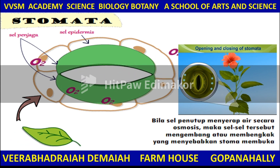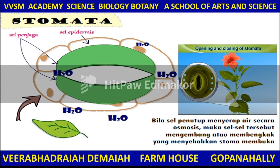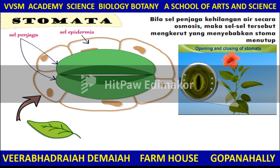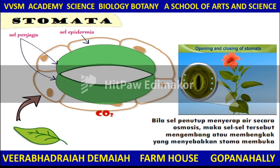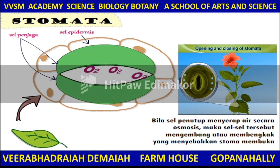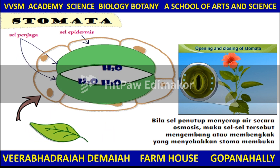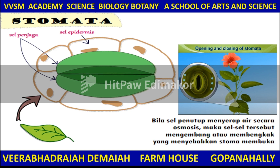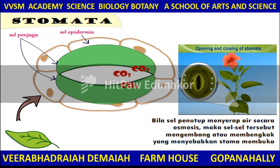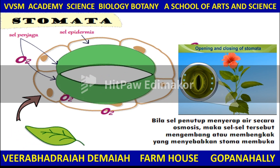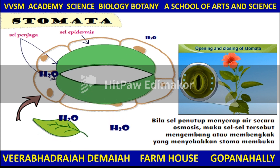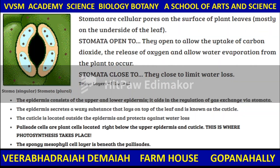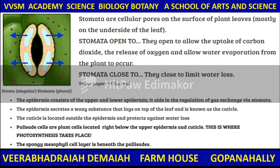Stomata is an important organ in the leaf where osmosis takes place. Carbon dioxide moves in and oxygen moves out along with water vapor. Stomata are the cellular pores on the surface of plant leaves.